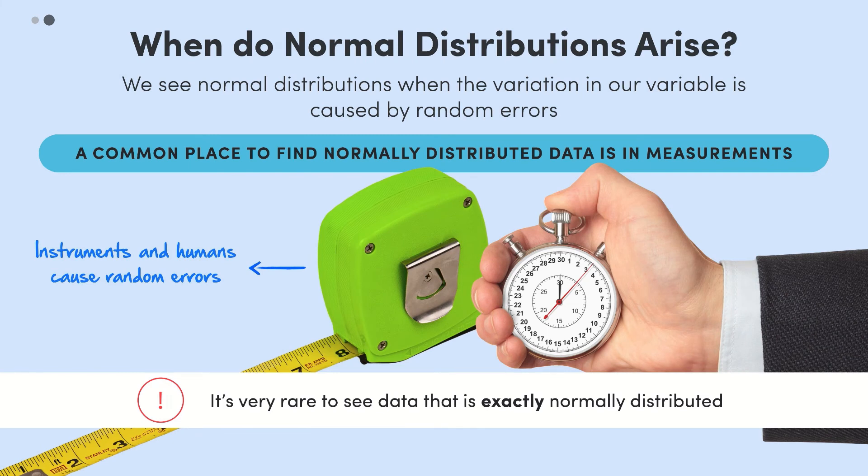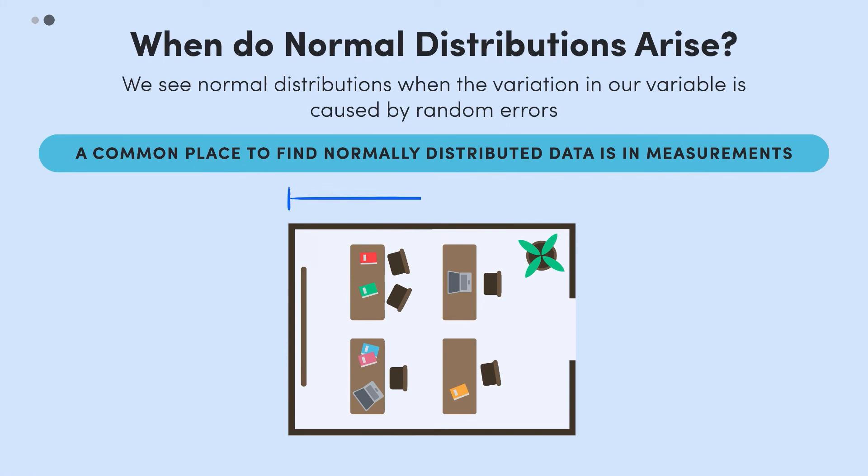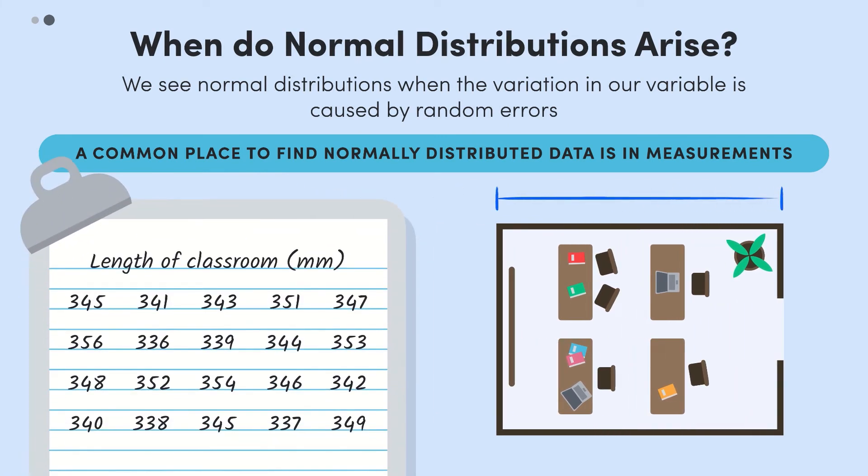Measurements often rely on instruments or humans that will cause random error. For example if you got 20 students to measure the length of the classroom to the nearest millimeter, we would likely get 20 different lengths, since each person will make small random errors in the process.